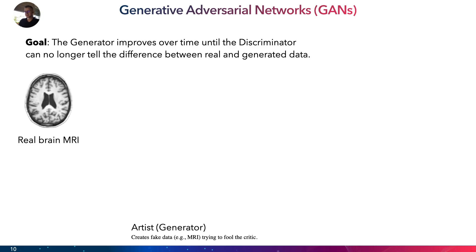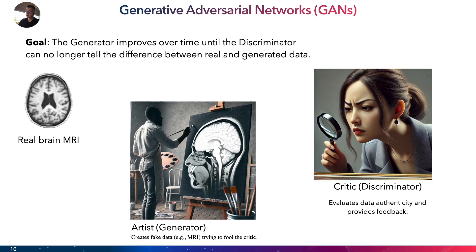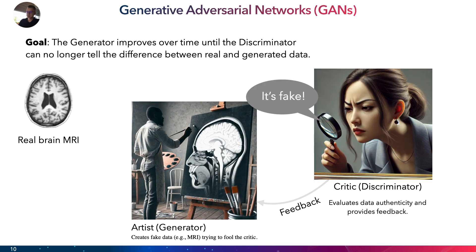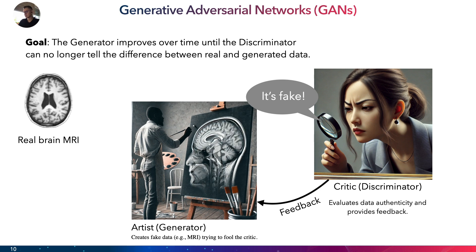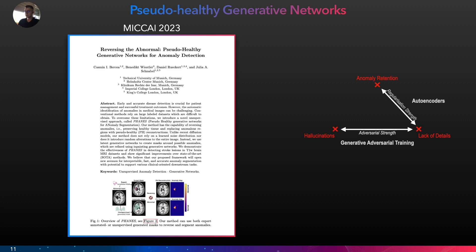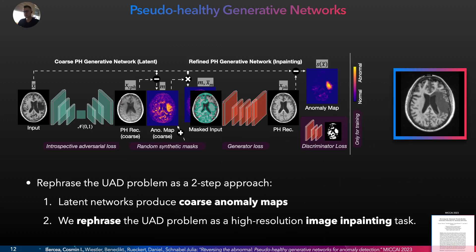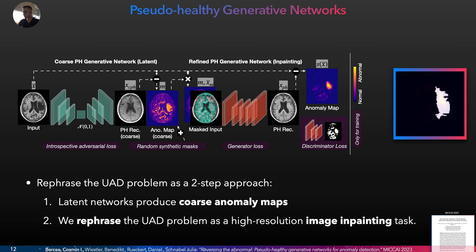In GANs, a generator tries to simulate the real data distribution and the discriminator analyzes and provides feedback to the generator on the synthesized image. However, this introduces a new challenge in anomaly detection, namely hallucinations. We address this by rephrasing anomaly detection as a two-step problem: first we compute coarse anomaly maps with a latent generative model, which we then use to condition an in-painting GAN.